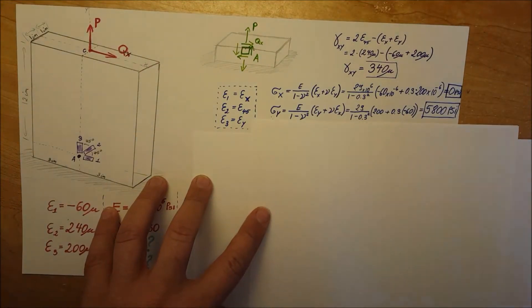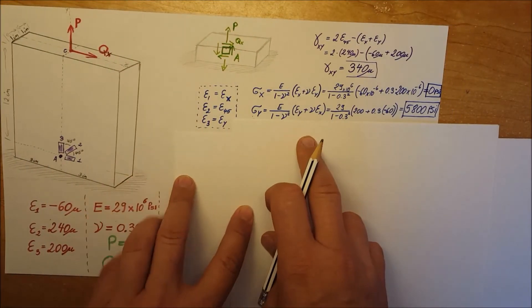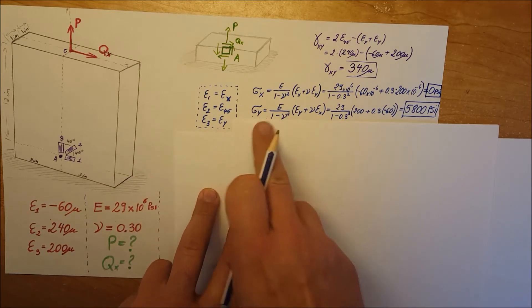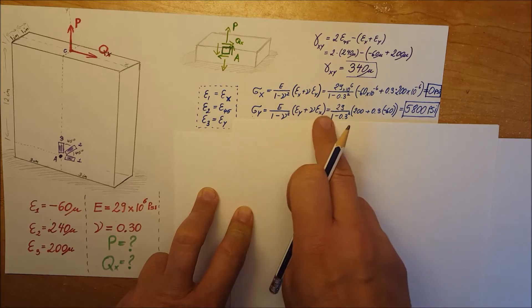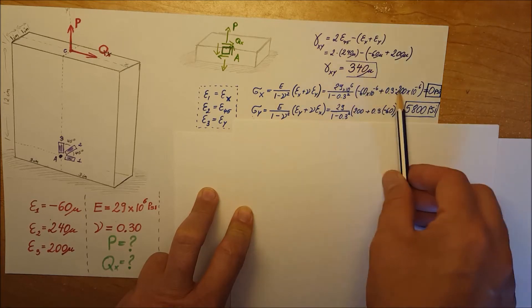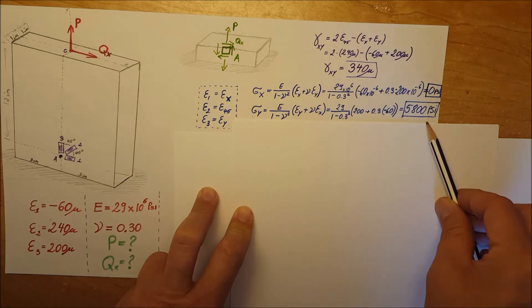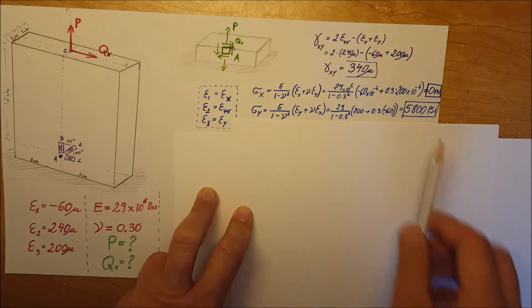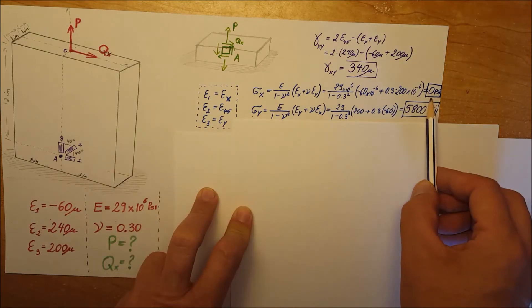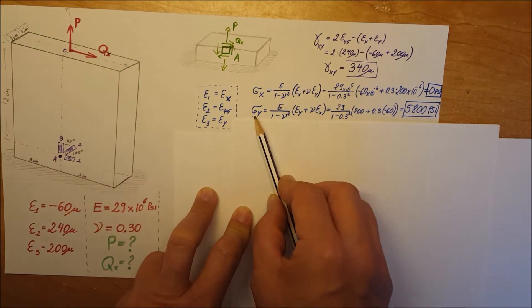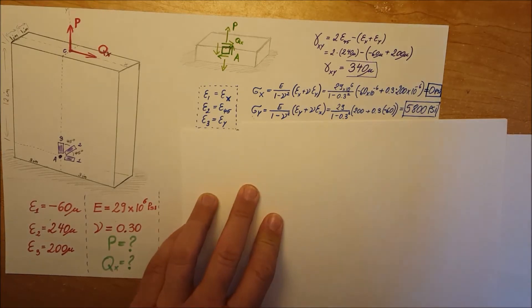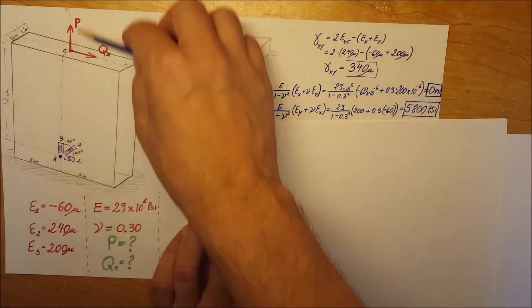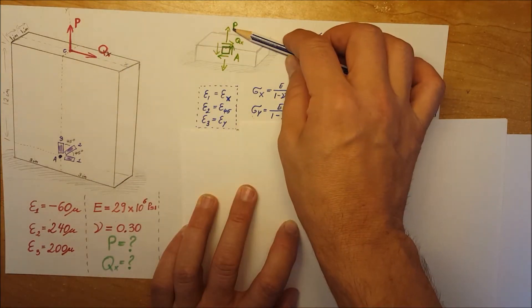Here are my calculations for this problem: σx and σy. Using the formula I just showed, plugging in our values, we find that in the x direction we have zero, and in the y direction we have 5,800 psi. In the y direction, we see we are dealing only with P.